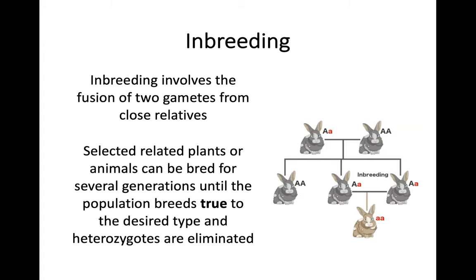That was the first part of this key area — selective breeding and plant field trials. The next part we're now going to go into is inbreeding: what it does, how it works, and the effects of inbreeding. After that, we'll talk about hybrids and further breeding with both plants and livestock.